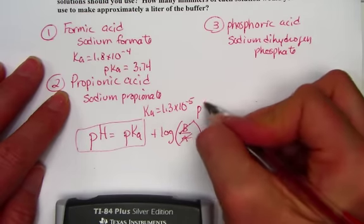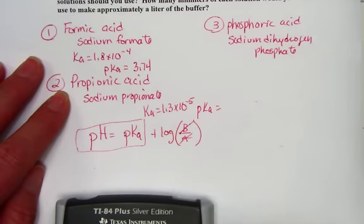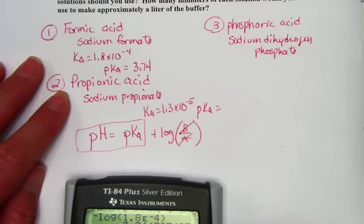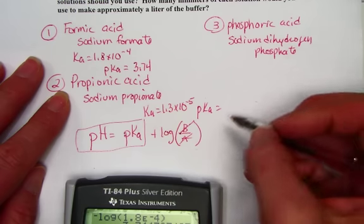Taking the negative log for pKa: negative log of 1.3 E negative 5 equals 4.89.